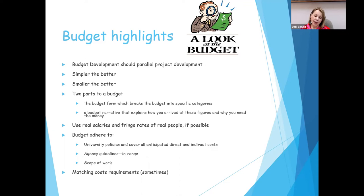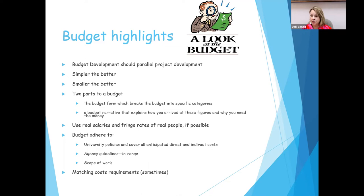The budget has to be very parallel and aligned with the narrative. You don't want to have something not mentioned in your narrative and then have the reviewer find it in the budget line item — like a drone, for example. You may have never mentioned a drone in your narrative, and all of a sudden there's a line item for a drone in your budget.